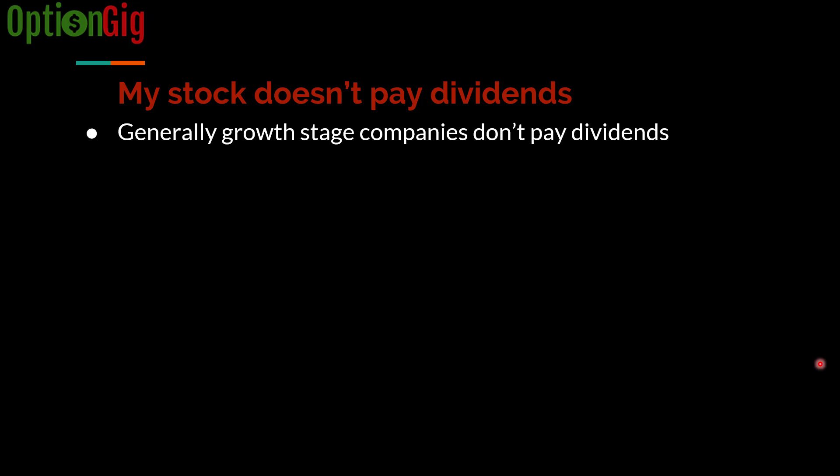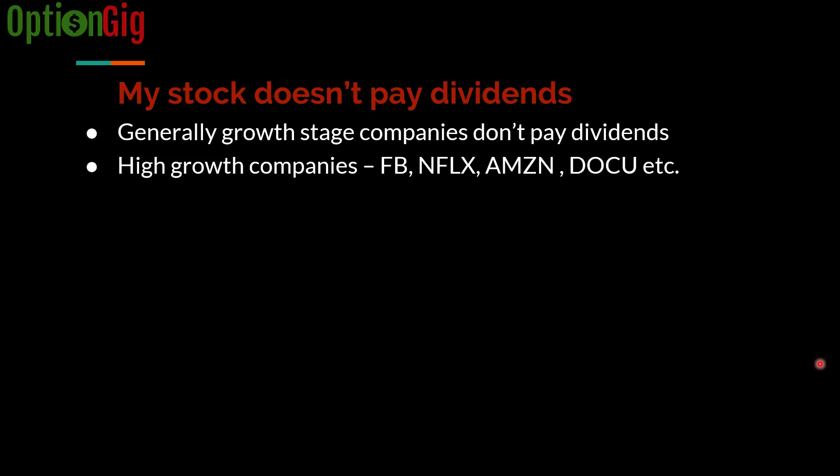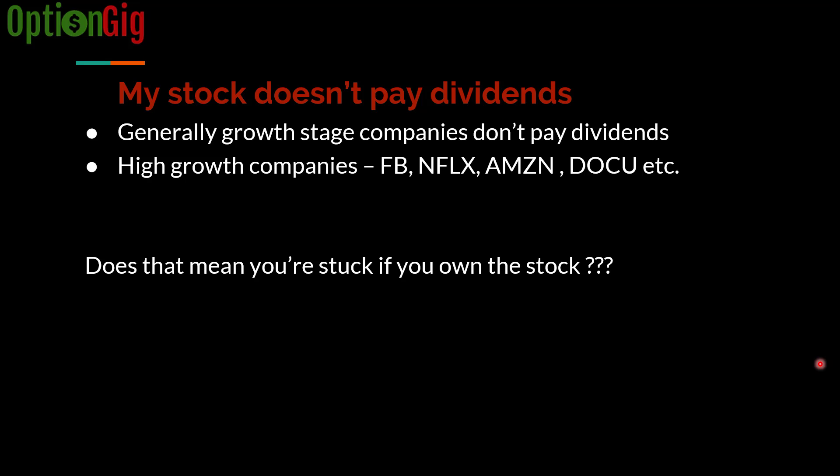Growth-stage companies generally don't pay dividends because they have better ways to invest their money — they invest in growing the business rather than returning money to shareholders. Examples include Facebook, Netflix, Amazon, and DocuSign. If you own shares in these companies, your cost basis is simply whatever price you paid, and you're at the mercy of the stock market as a pure stock investor.